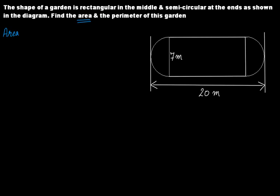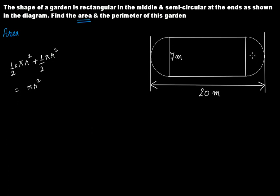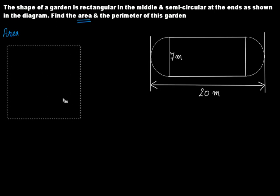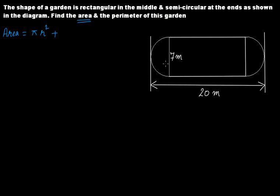The area of a circle is given by πr². So the area of a semicircle is half πr². Since we have two semicircles of equal radius, half πr² plus half πr² gives πr². So the combined area of both semicircles is πr².